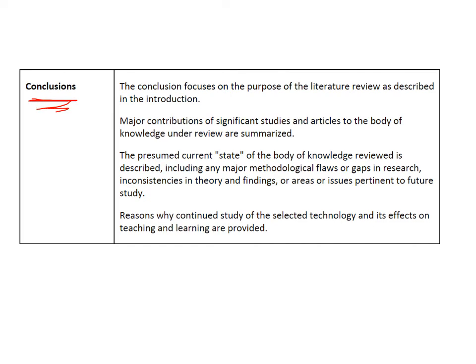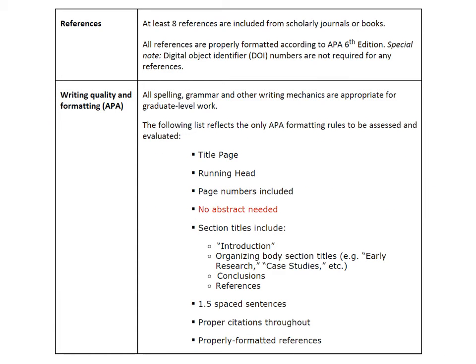The rubric includes very specific elements that need to be part of the conclusion of your paper — 'conclusions' because it isn't just one thing you're summarizing. Please note the specific characteristics of a conclusion that need to be included at the end of your paper. You also need a reference section with at least eight references to good research papers, along with details about how references need to be included and formatting requirements for your overall paper.